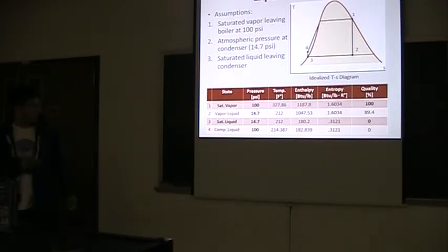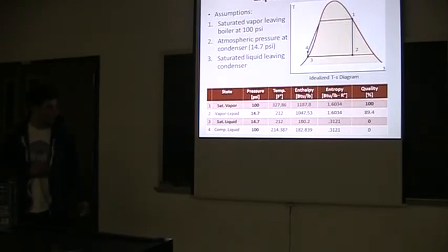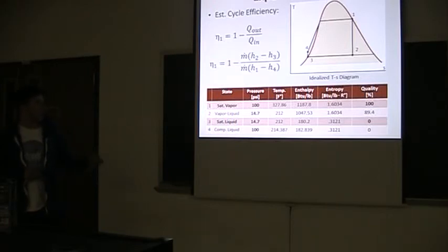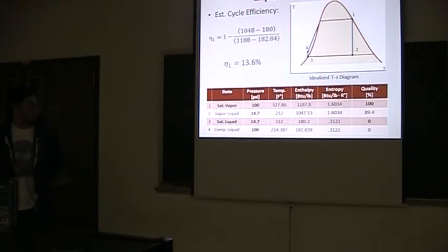This gave the values on this table. From the steam table, I was able to find the rest of these values. And with this, I found the estimate for the thermal efficiency of the system. Using this equation, I replaced the heat out with the heat in. The heat out and the heat in with the change in enthalpy. This gave an estimated thermal efficiency of 13.6%.